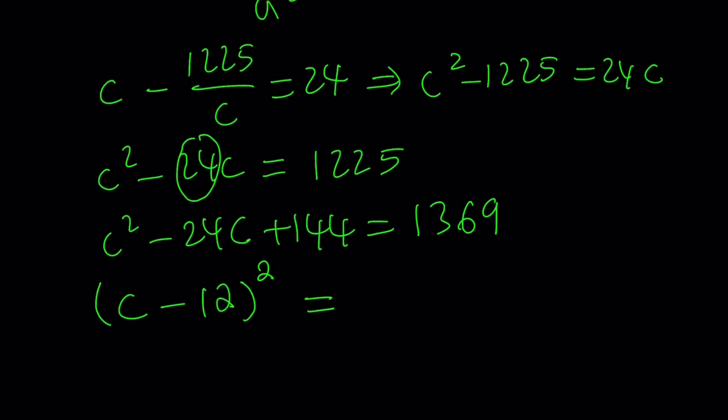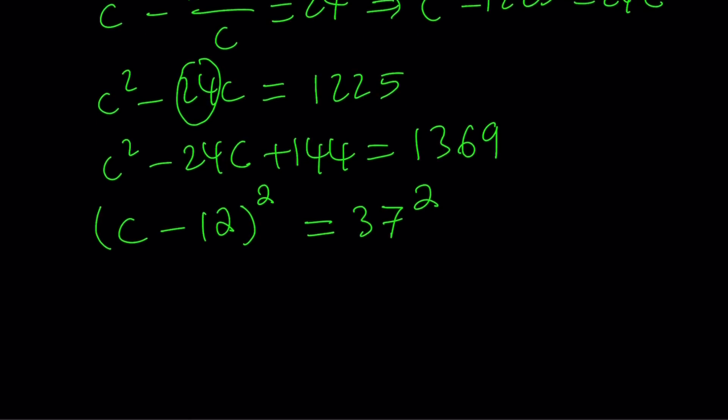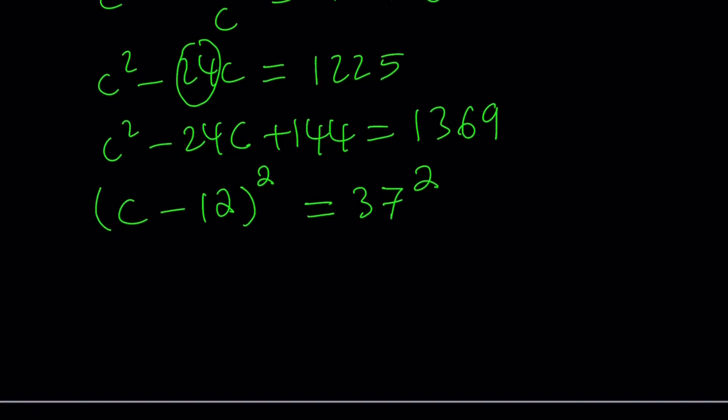If we add 144 on the right-hand side, we get 1369. The left-hand side becomes a perfect square, which can be written as c minus 12 squared. And 1369 is also a perfect square, which is 37 squared. This is nice, it kind of indicates that the solutions are integers. From here, we can say c minus 12 is either 37, or c minus 12 is negative 37.